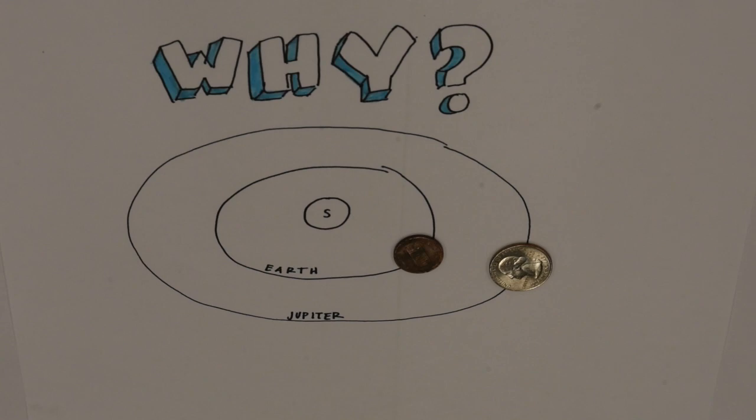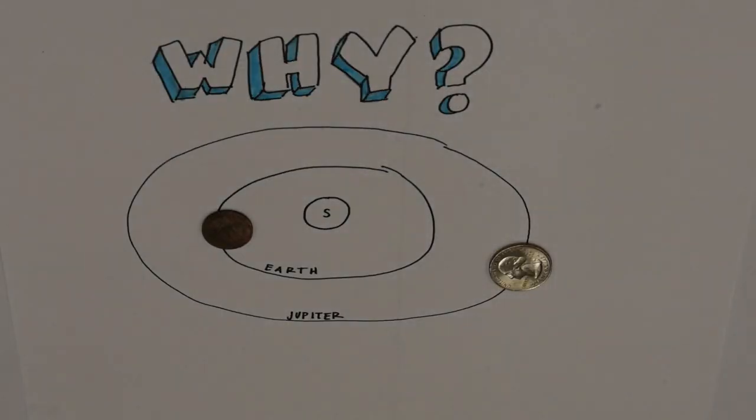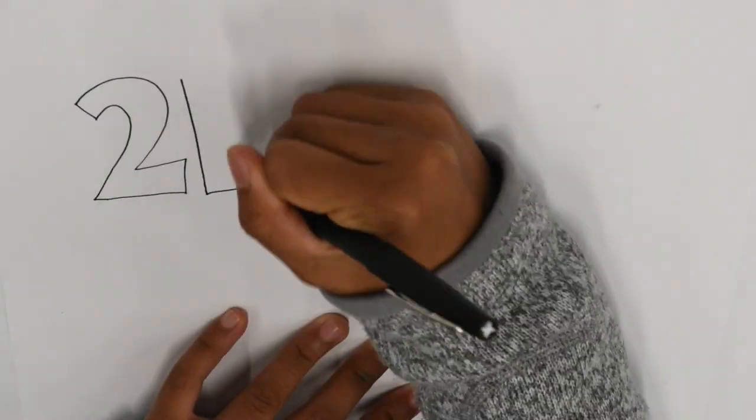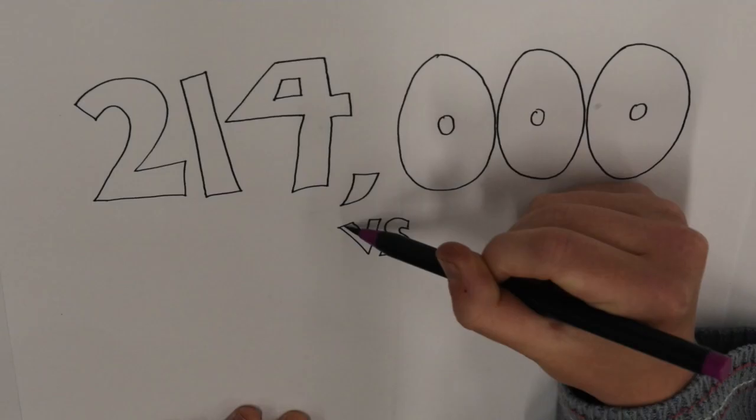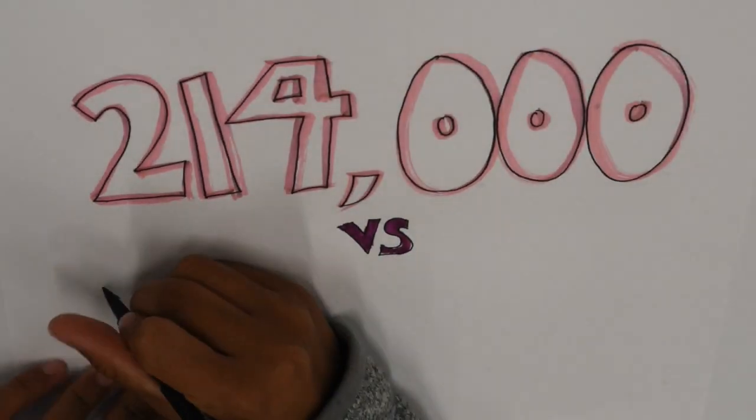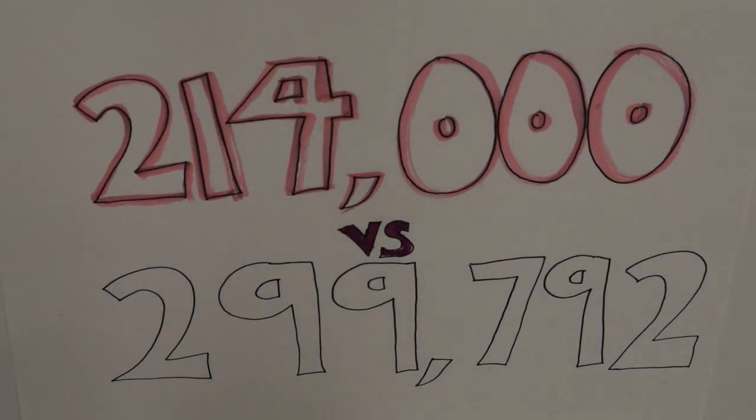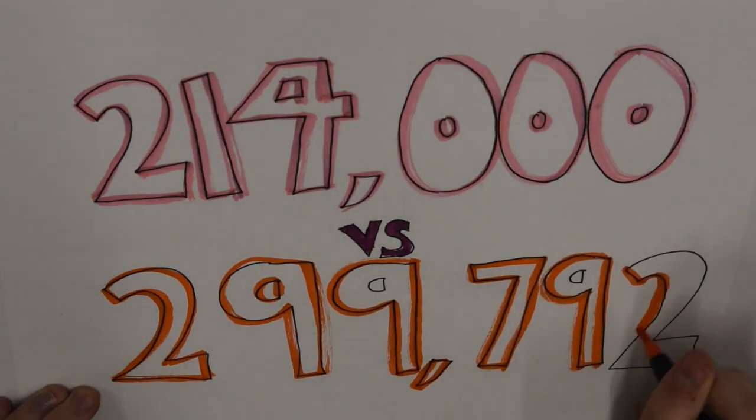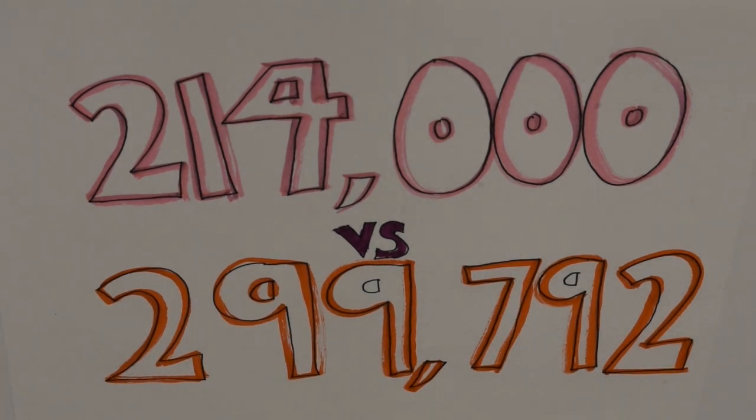This time difference between the expected and actual time of transit proved that the speed of light was not, in fact, infinite. Ole Rømer's calculated value for the speed of light was 214,000 kilometers per second, which is astonishingly close to the accepted value of 299,792 kilometers per second. I think we can all dub this experiment as a success.